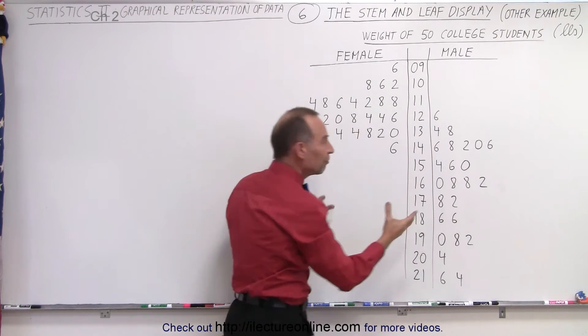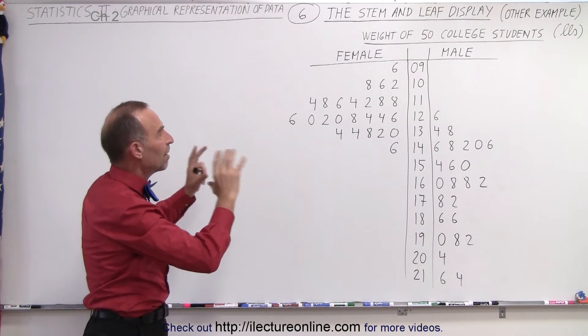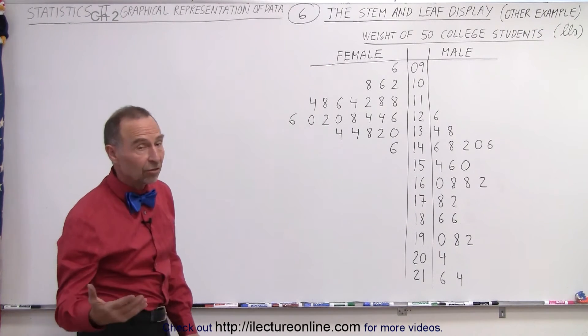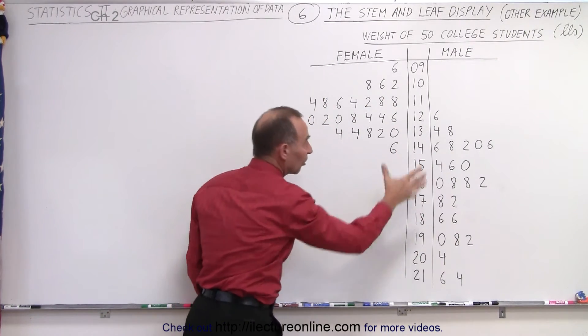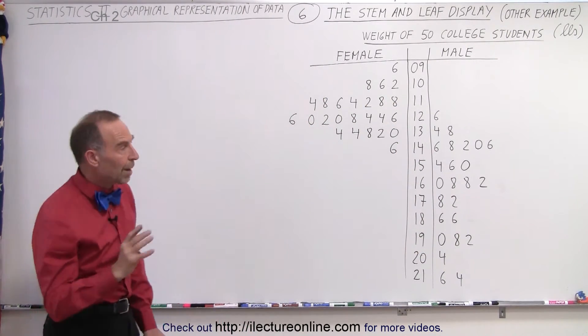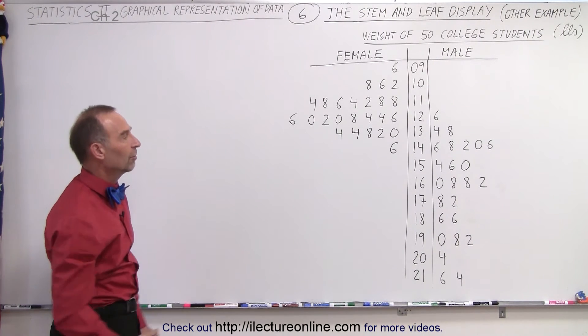And so you can see in a very quick view you can get all kinds of information from that simple stem and leaf display. And it doesn't take very long to take the 50 data points and place them onto such a display. So you can see the power behind this, how quickly and how easily you can see all kinds of information.